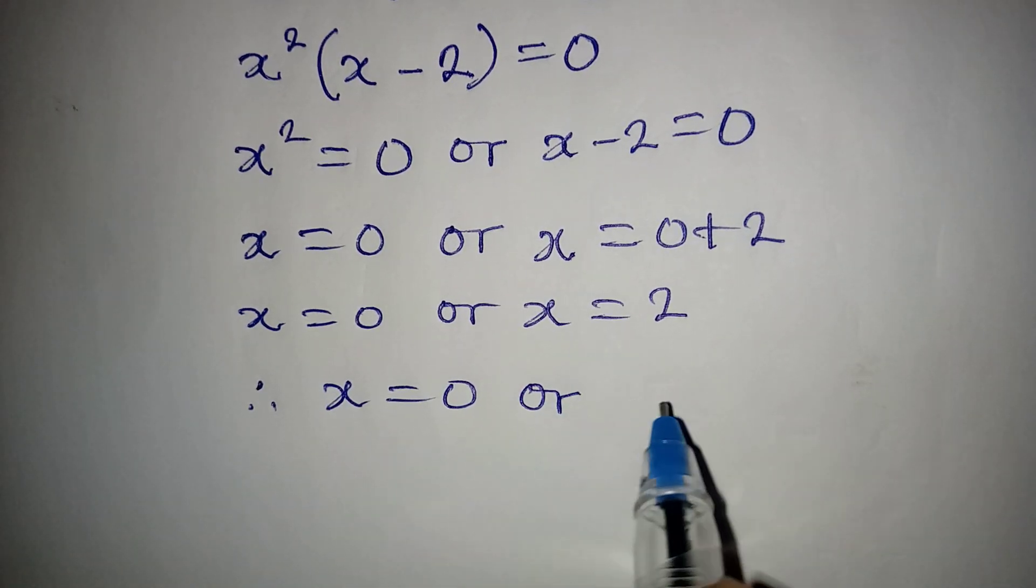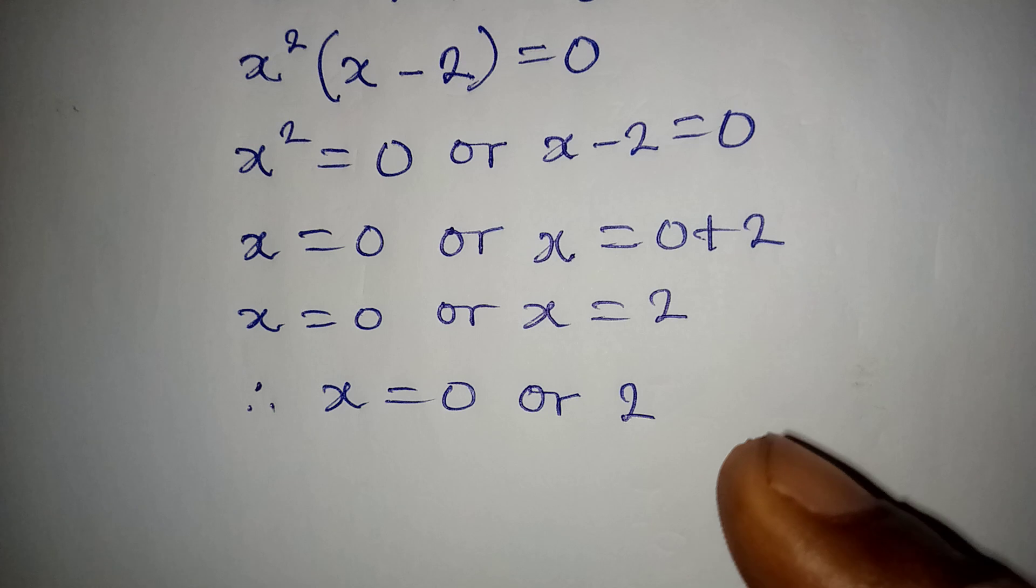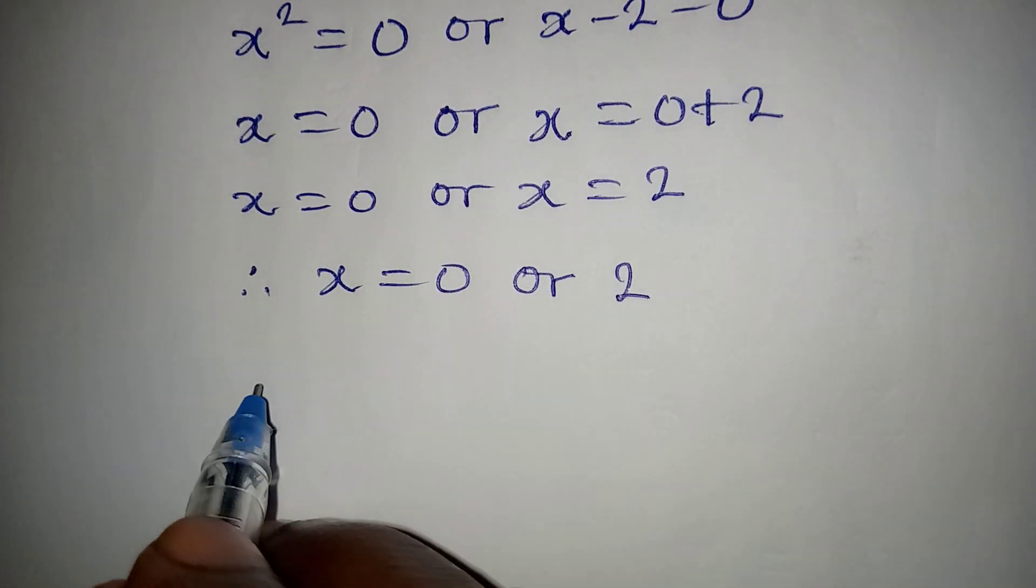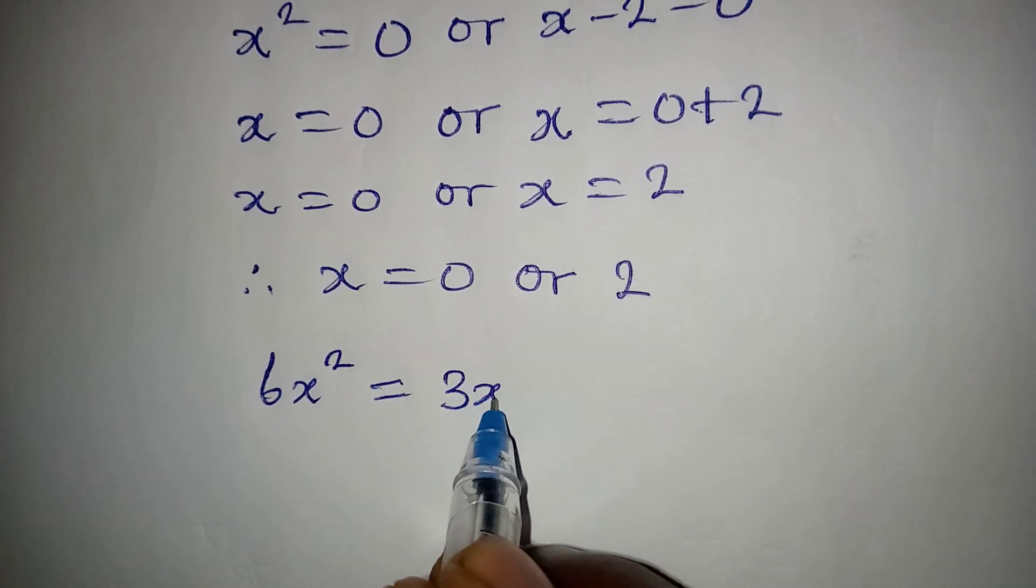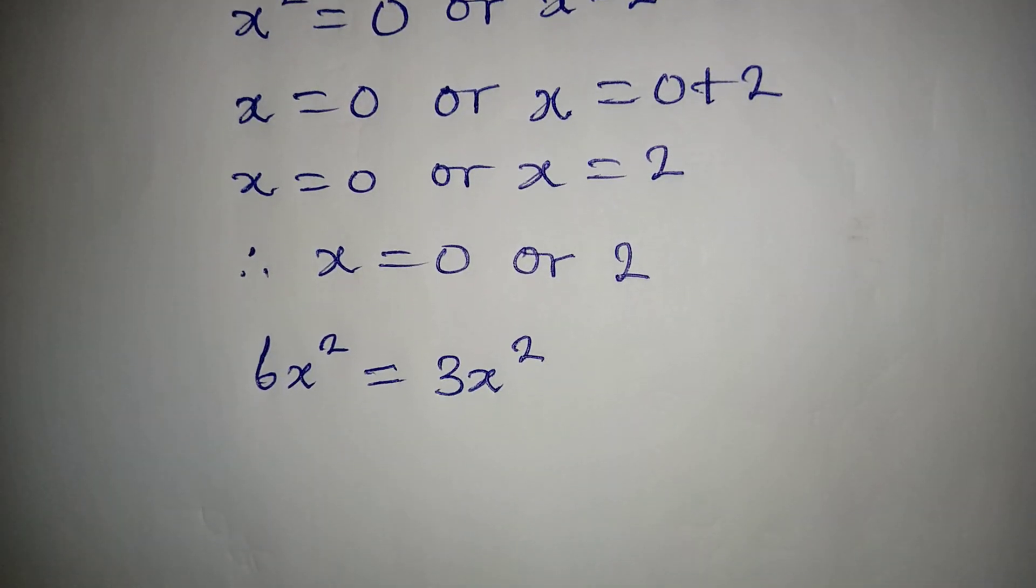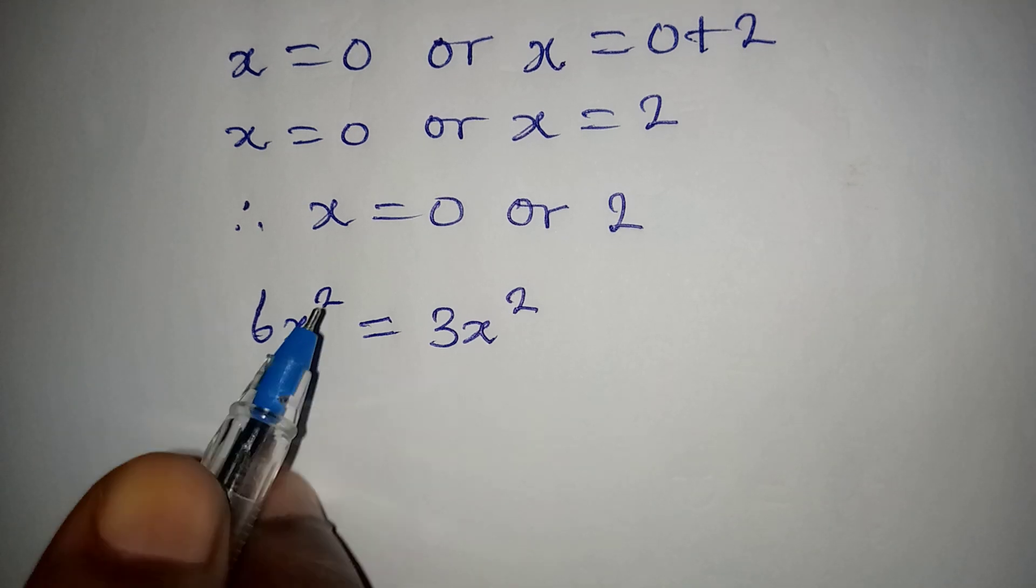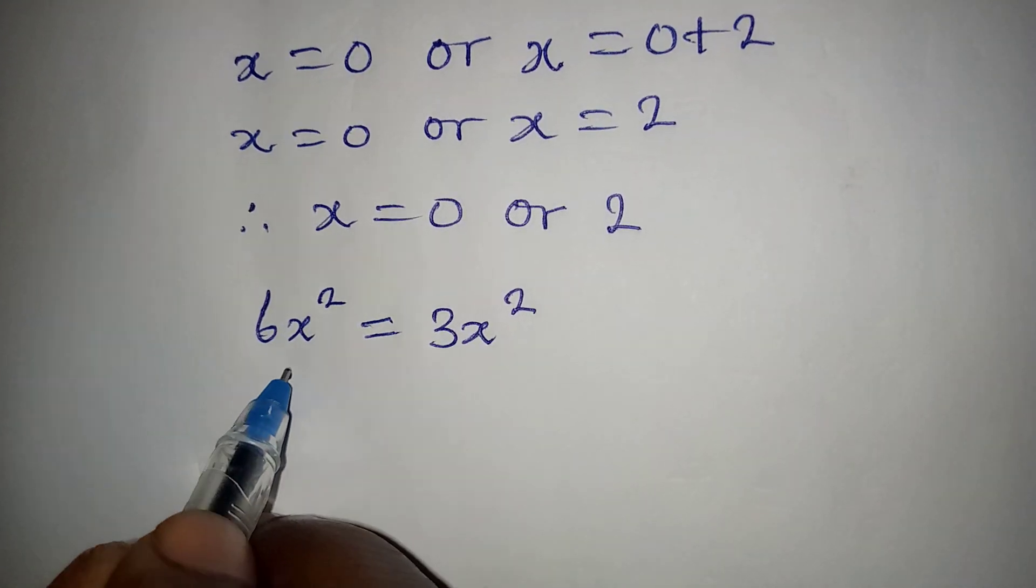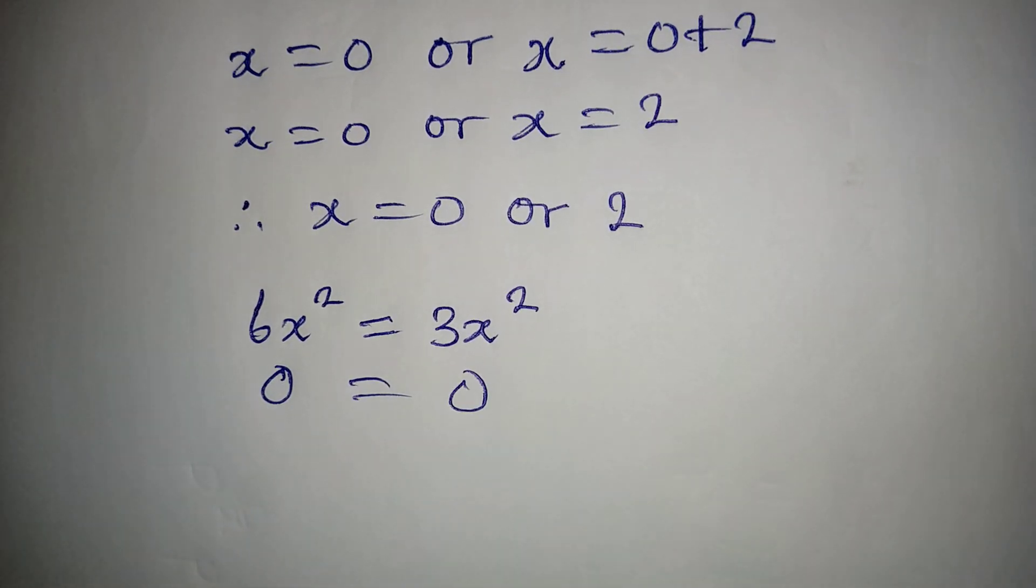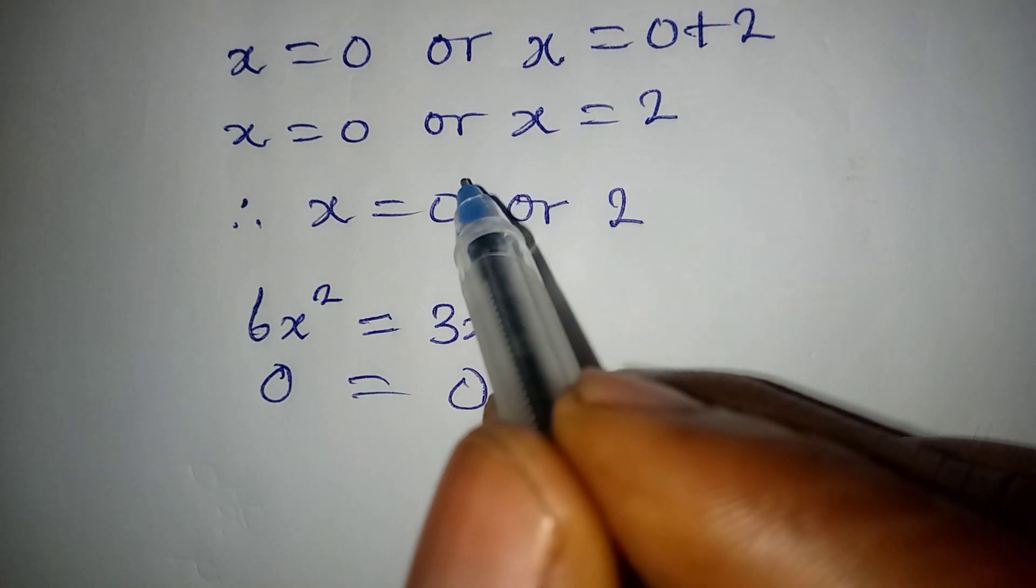Therefore the two values of x will be x equal to 0 or 2. And then this is the original equation: 6x to the power of 2 equals 3x to the power of 3. If you substitute x to be 0, definitely you'll be having 0 on both sides, meaning that 0 is satisfying.